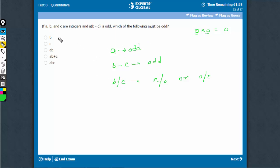Which of the following must be odd? B—not necessarily; in this case B is even. C—not necessarily; in this case C is even. AB—not necessarily; A is odd for sure, but B may be even.